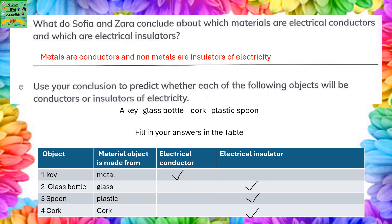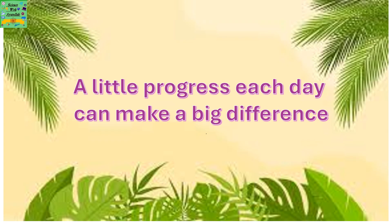What do Sophia and Zara conclude about which materials are electrical conductors and which are electrical insulators? Metals are conductors and non-metals are insulators of electricity. Use your conclusion to predict whether each of the following objects will be conductors or insulators: key, glass bottle, cork, and plastic spoon. The key is a metal, so it is an electrical conductor. Glass bottle, spoon, and cork are non-metals, so they are electrical insulators.